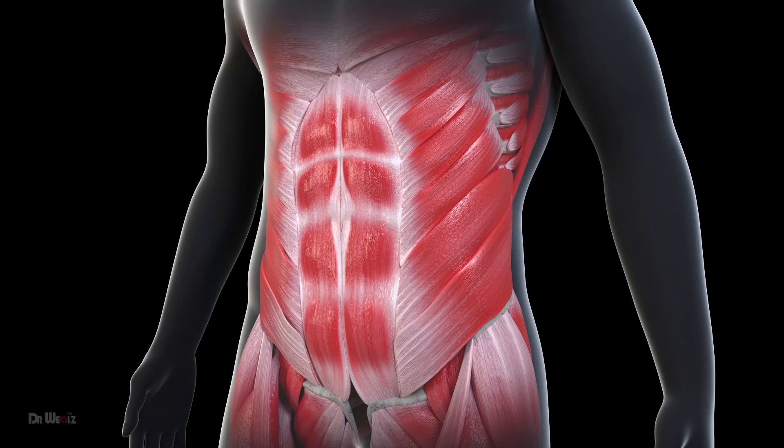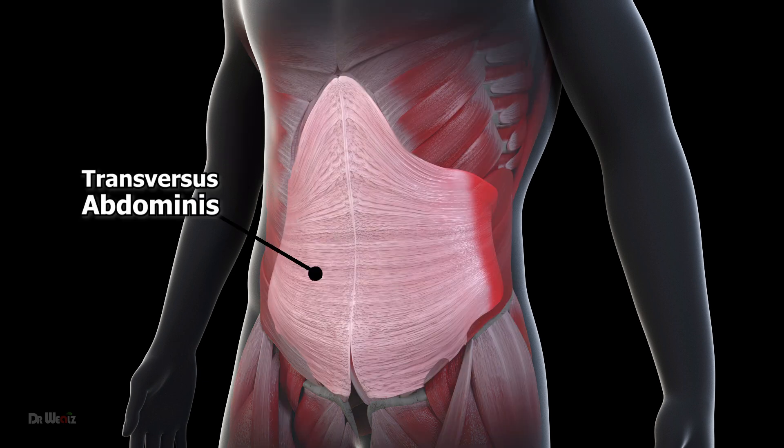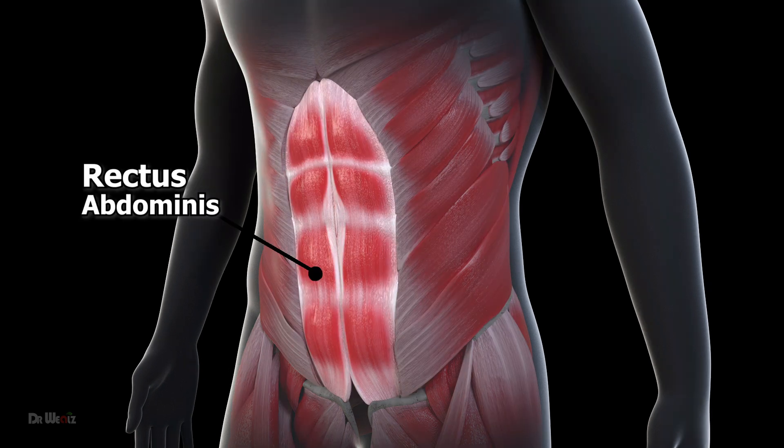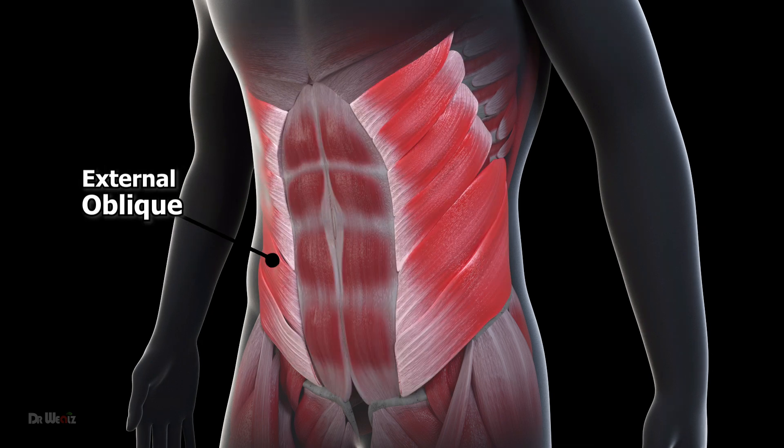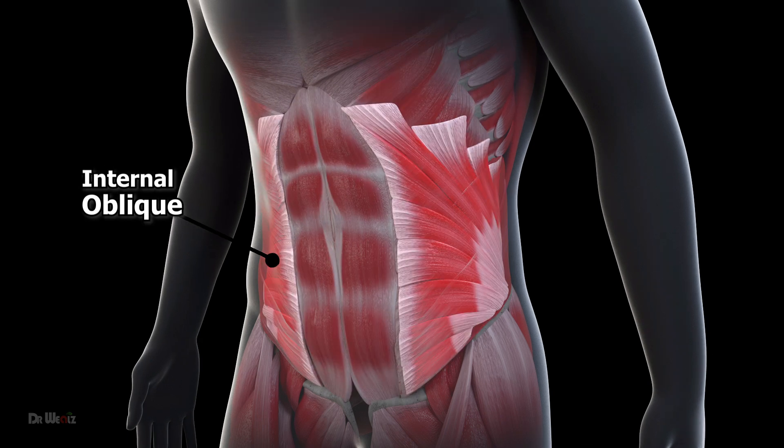In this video, we'll explore the anatomy and function of the four muscles that make up the abdominal wall: the transversus abdominis, rectus abdominis, external oblique, and internal oblique.